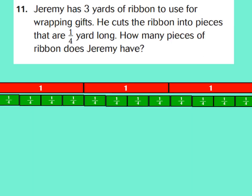And let's look at number 11. It says Jeremy has 3 yards of ribbon. So I went ahead and put down 3 fraction bars to use for wrapping gifts. He cut the ribbon into pieces that are 1/4 yard long. So look right here. I took my 1 whole and made 1/4, 2/4s, 3/4s, 4/4s to show 1 whole. Because 4/4s equals 1 whole. How many pieces of ribbon does Jeremy have? Go ahead and press pause now. And I want you to write down your answer and we'll check it together.